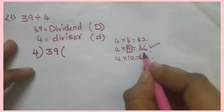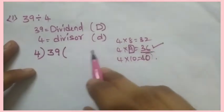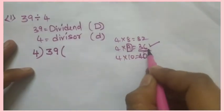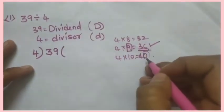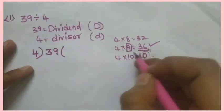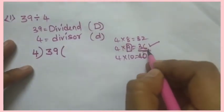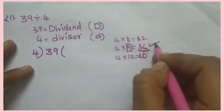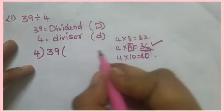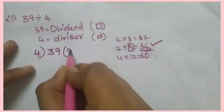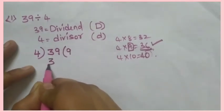We should not take a number more than the dividend. Here 39 is not there, so before 39 we look for 38 — not there. 37 — not there. 36 — yes! So we take 36. 4 nines are 36, so we write 9 as the quotient here.